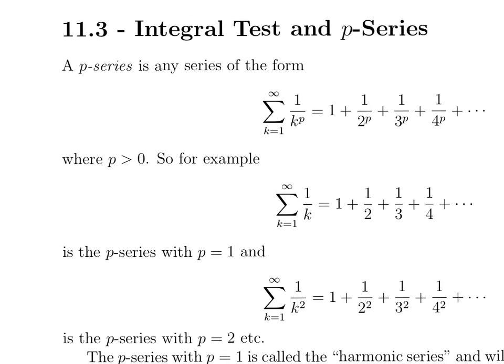A p-series is an infinite series that looks like this: you pick a number p, and then you add up all the numbers 1 over k to the p.